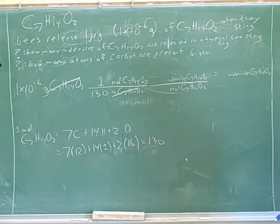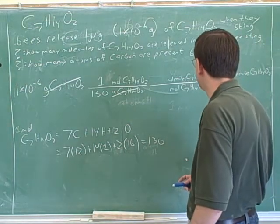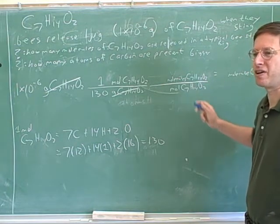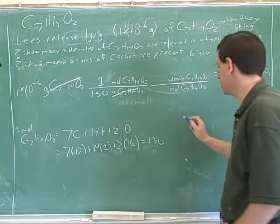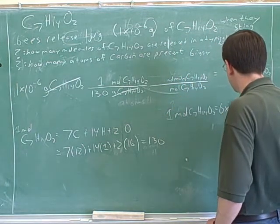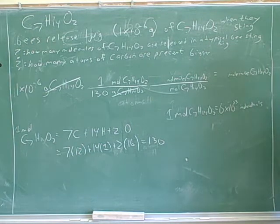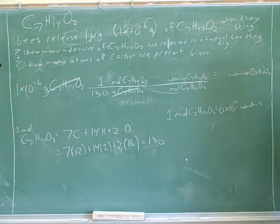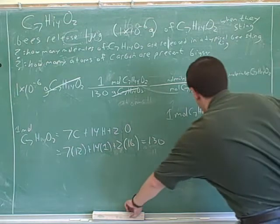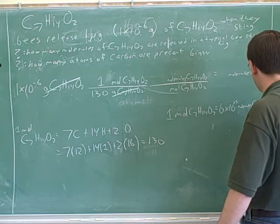I know that one mole is equal to Avogadro's number. You might say seven plus 14 plus two times Avogadro's number — but the problem is that now you're counting atoms. One mole of C7H14O2 equals 6 times 10 to the 23rd individuals. In this case, the individuals are molecules of C7H14O2.